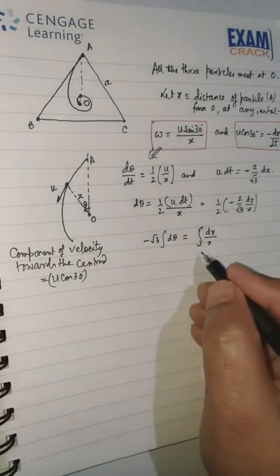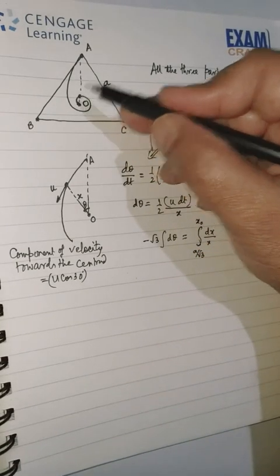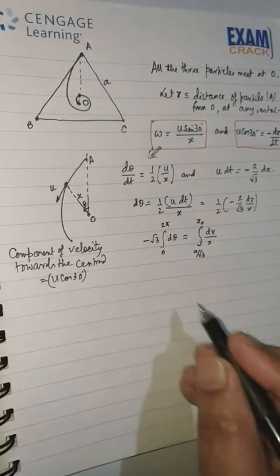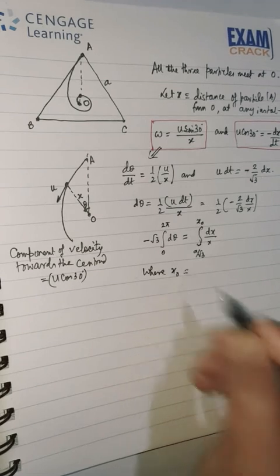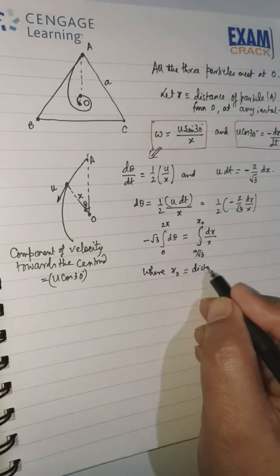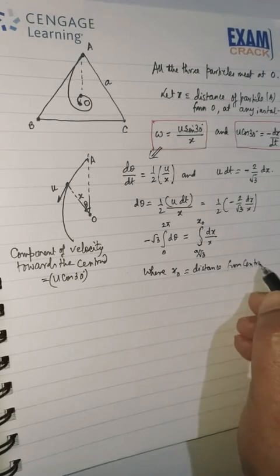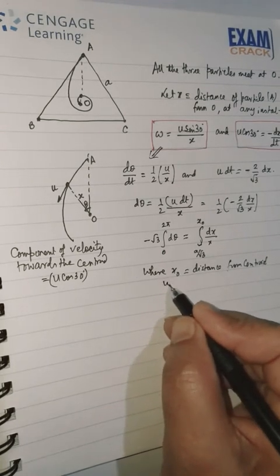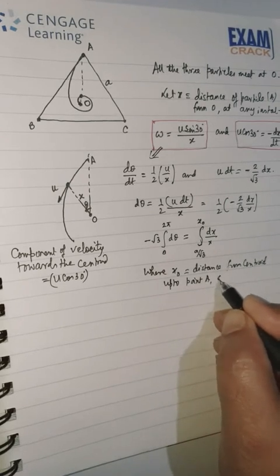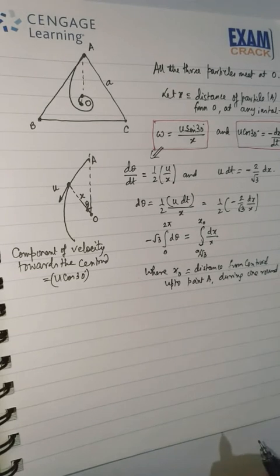And X initial value is A/√3. When this becomes at this location, let's say it is x₀, where it will be 0 to 2π, that angle. What is x₀? So here, x₀ will equal the distance from the centroid up to point A during one round, when it moves one revolution.